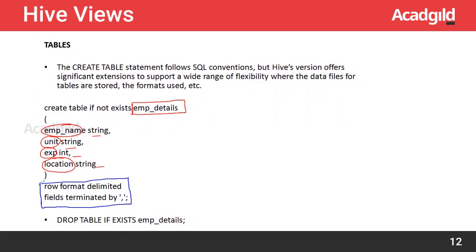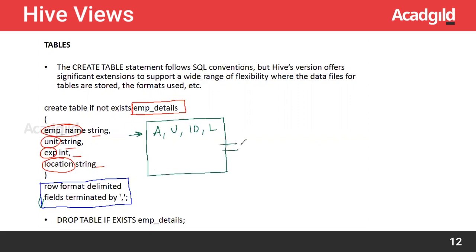These things are completely optional — you may ignore them. Suppose we have employee name as a unit, experience as 10, location as L — this is one record. Suppose we have a file and we want to load the content of that file into the Hive table. The file contains comma as a delimiter, and the row format is delimited, so you specify row format delimited and fields terminated by comma.